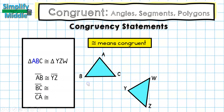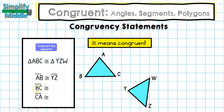When two triangles are written as congruent, the order that the letters are written describes their congruence. Because the letters A and B are written first, it's referring to line segment AB. As long as I write it in the same order, line segment YZ is congruent to line segment AB. Then looking at the second two letters, line segment BC is congruent to line segment ZW.